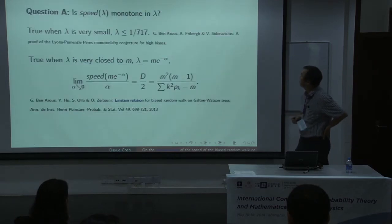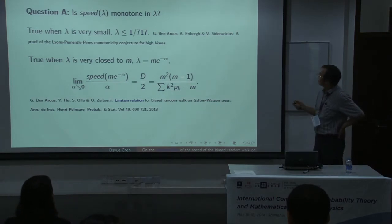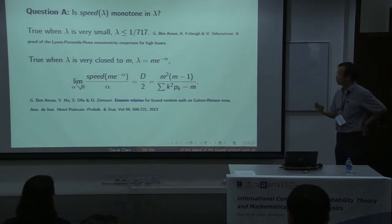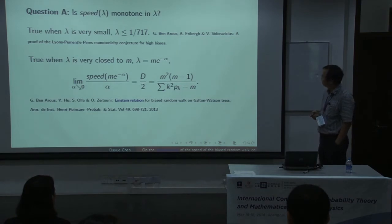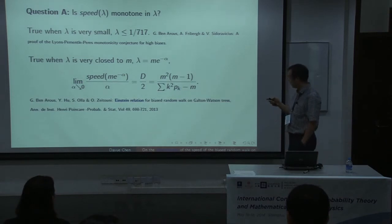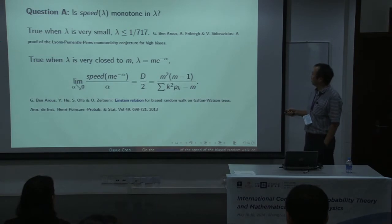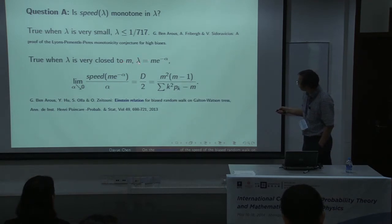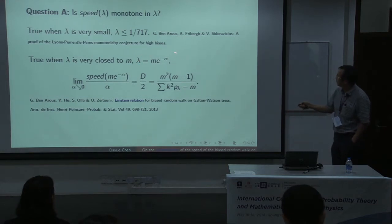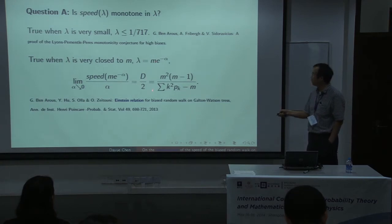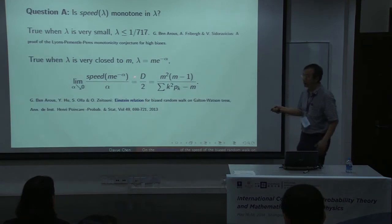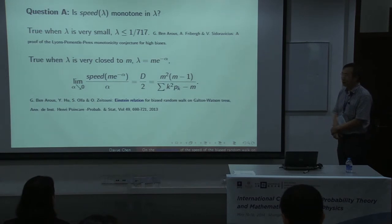We still have good knowledge about the speed, but we can ask many questions. The first question is: is the speed monotone in λ? That's quite a natural question but seems to be very difficult. The only result we know is it's true for λ very small — this shows it's true in a neighborhood of zero — and it's also true for λ very close to the mean m, where there is a known asymptotic relation.